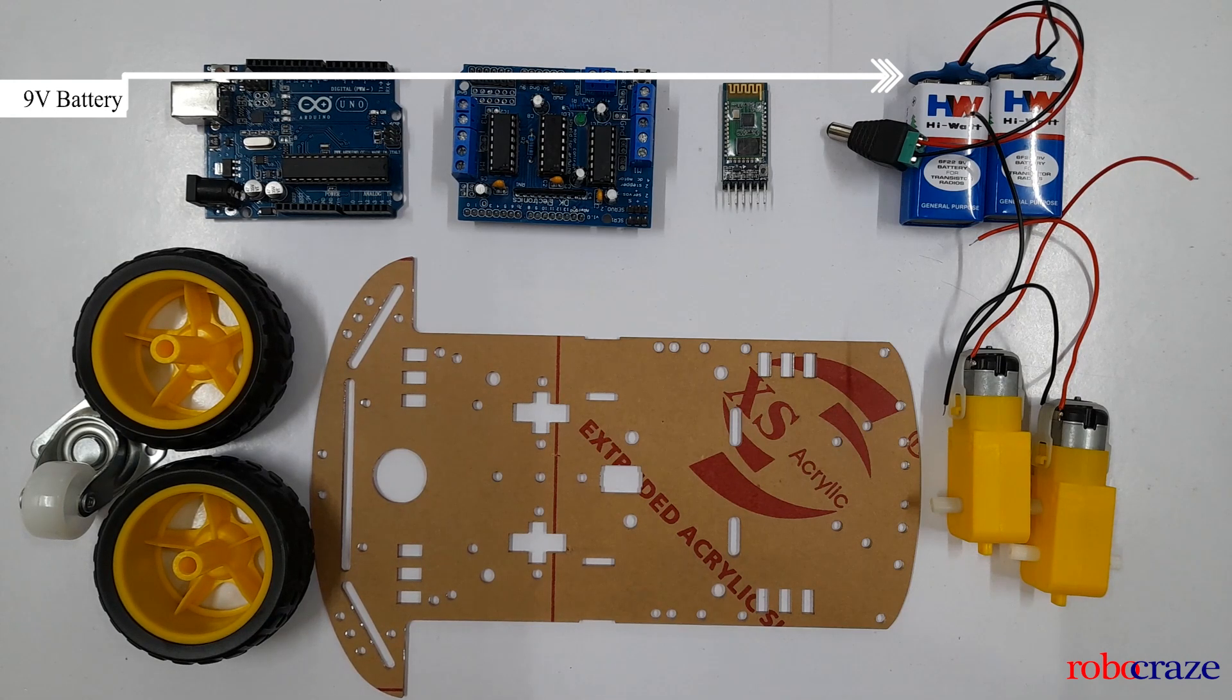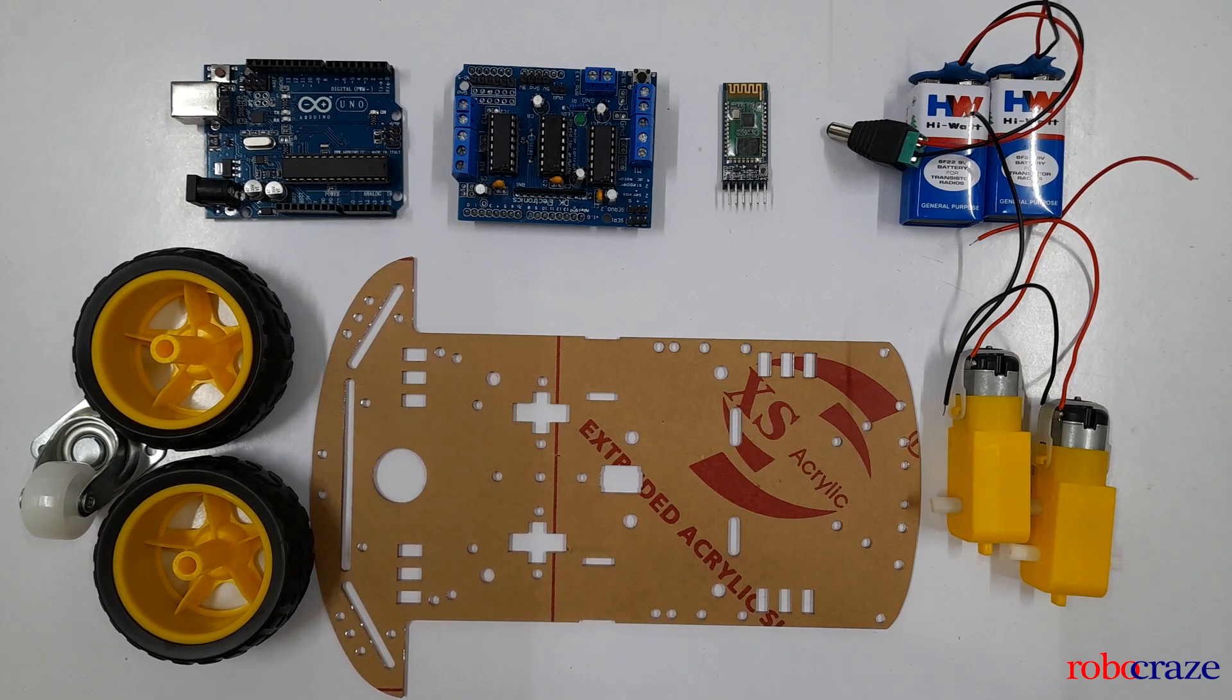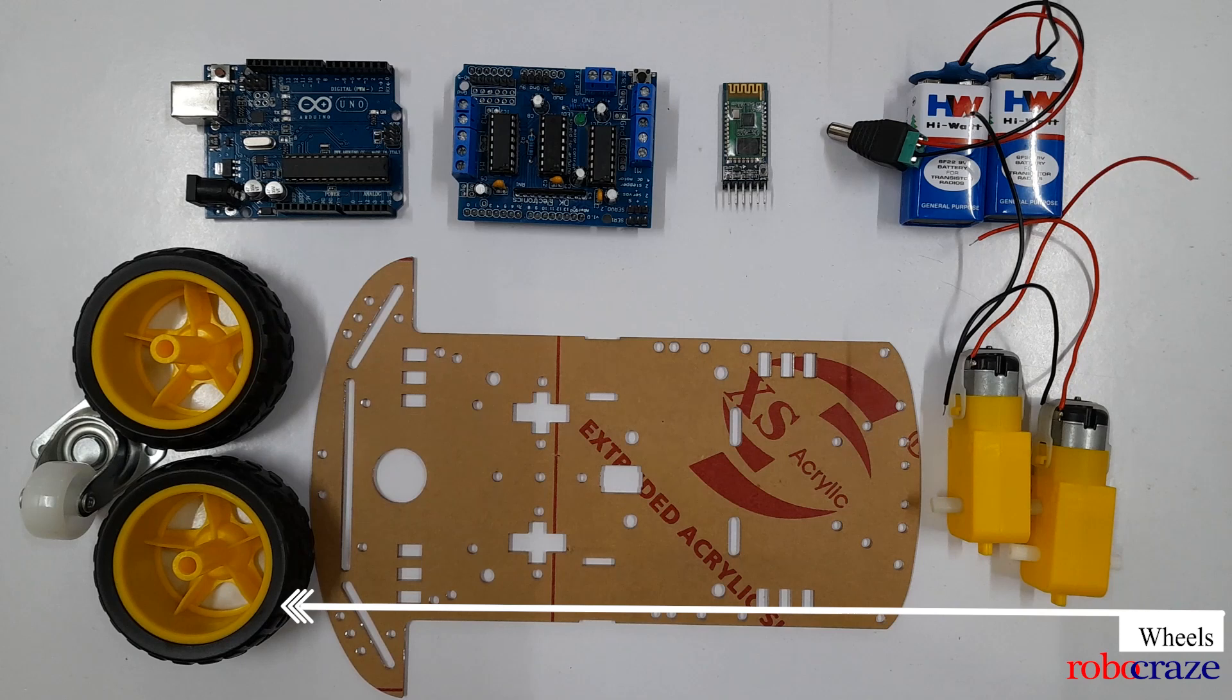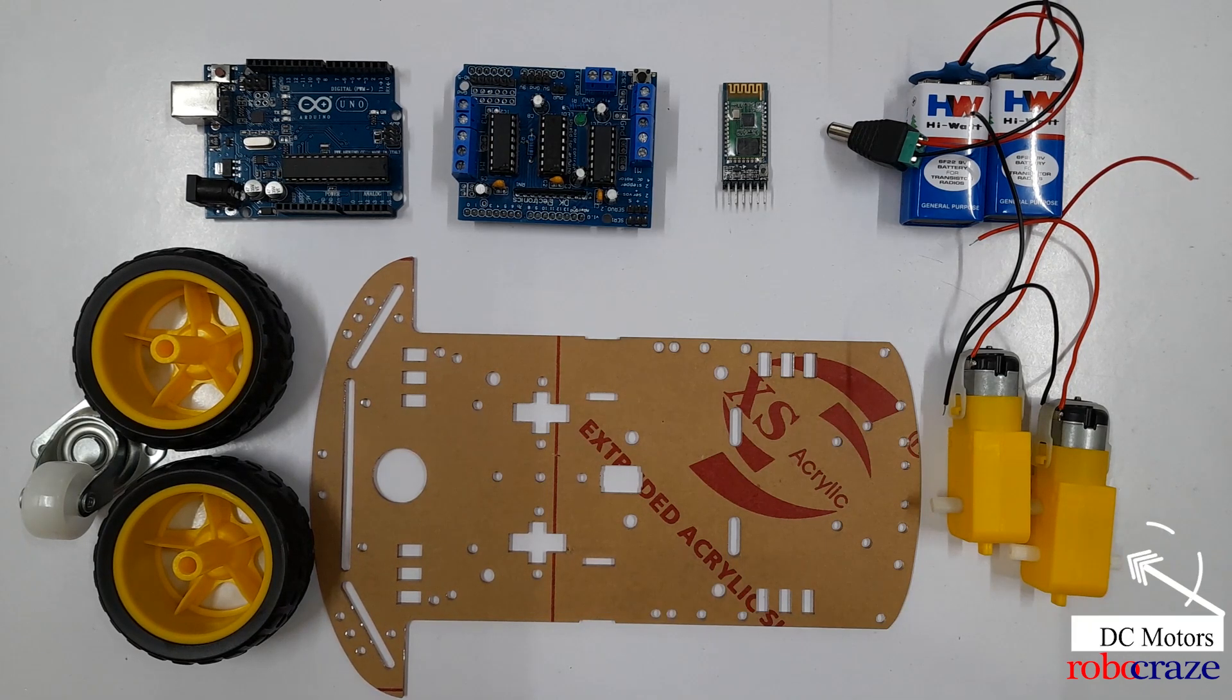We'll be using two wheels to provide movement while the universal wheel aids us in maintaining balance and stability. They are crucial for the car's locomotion and navigation. We'll be using a couple of DC motors to provide necessary torque to drive your car. They are controlled by the motor driver shield and enable your vehicle to move forward, backward, left and right.